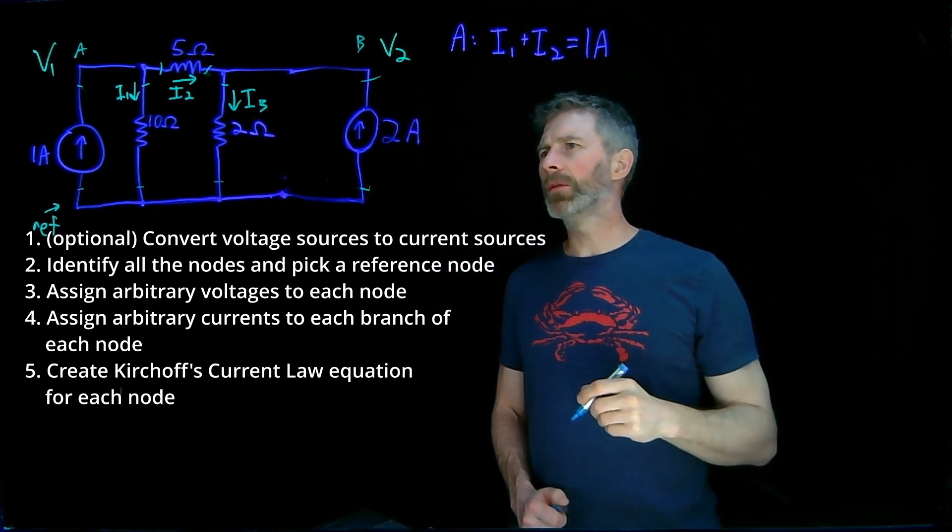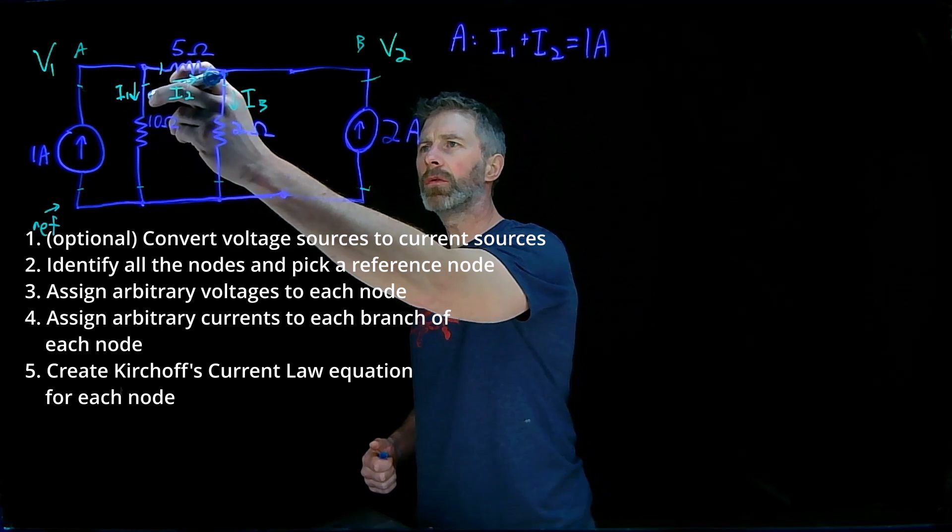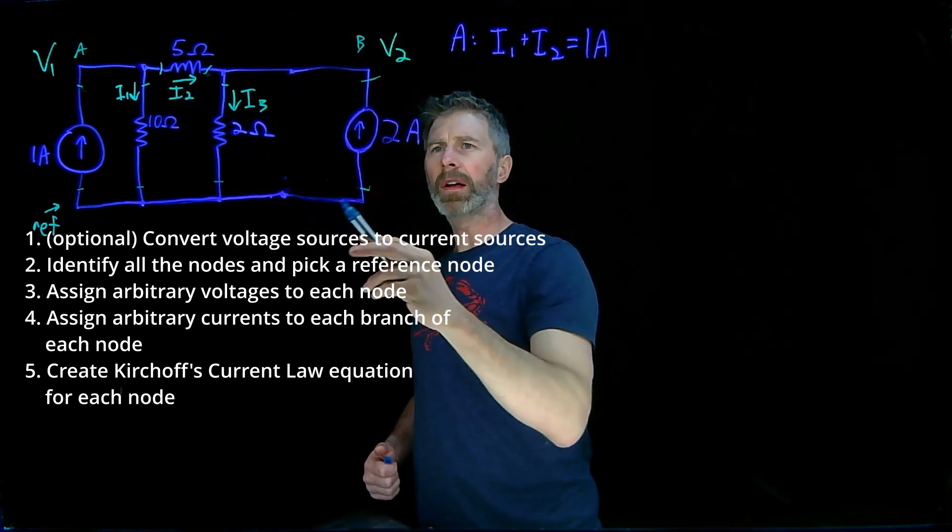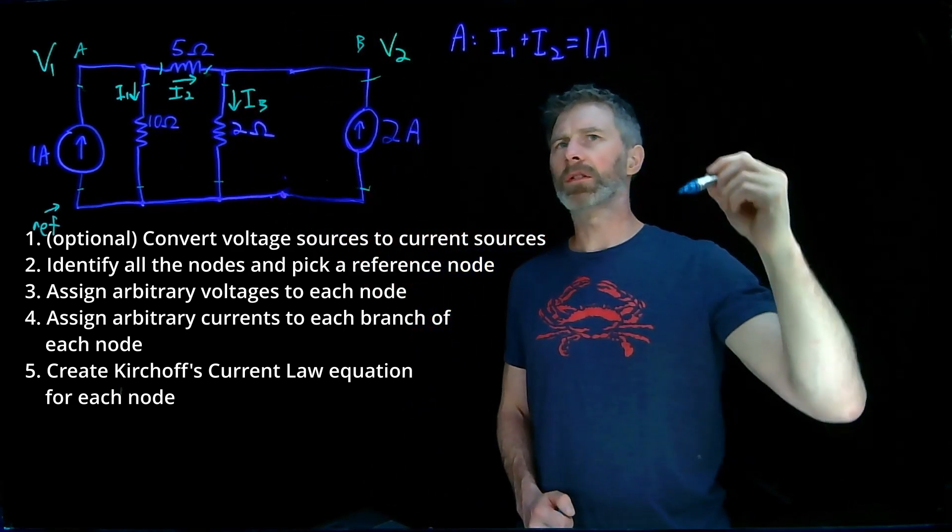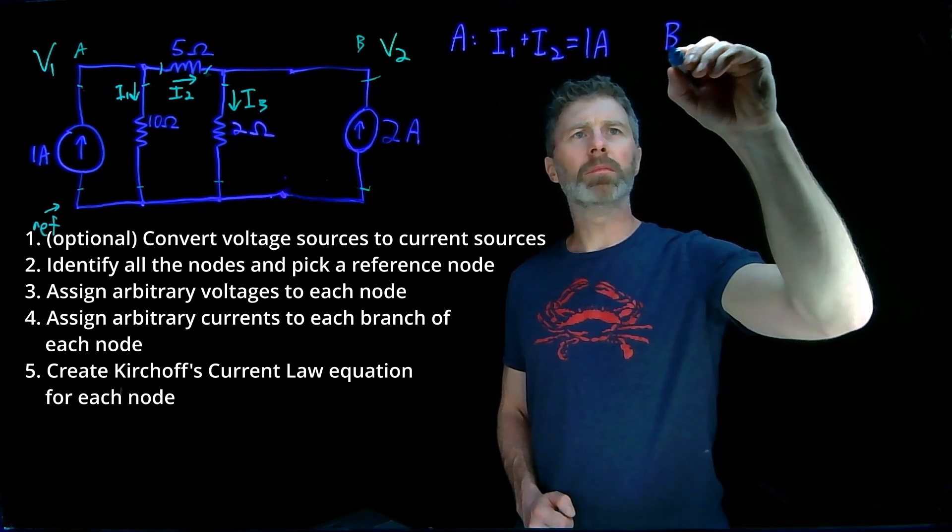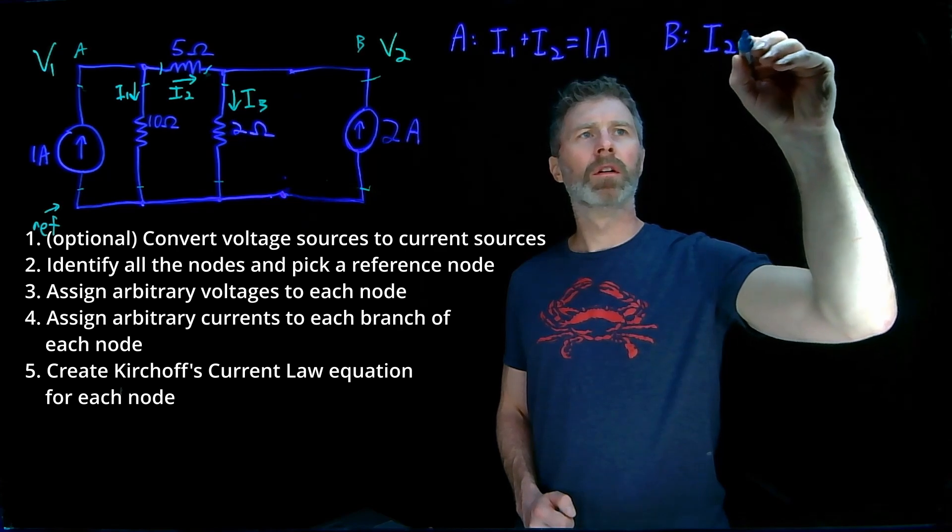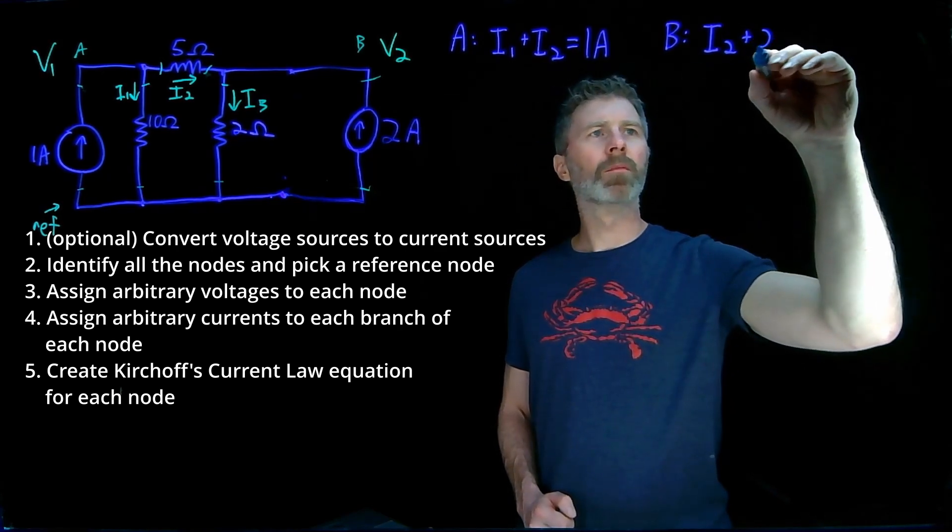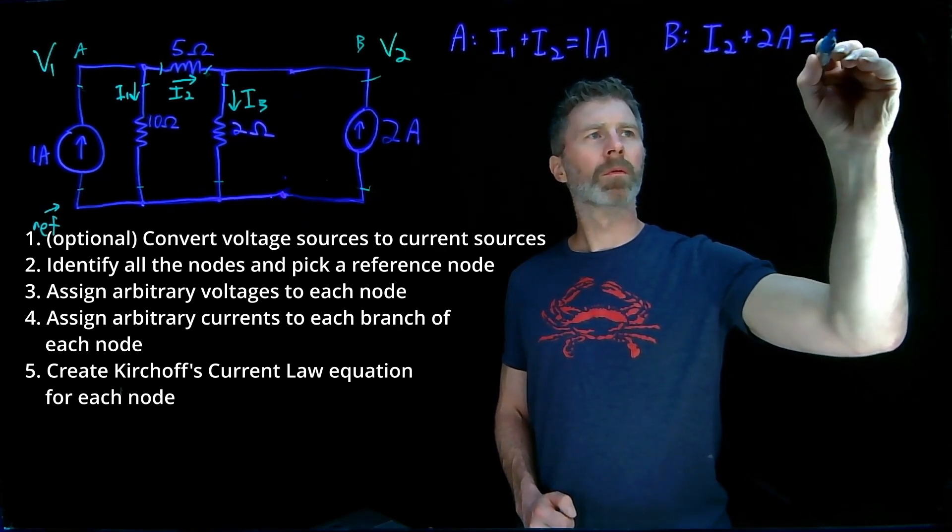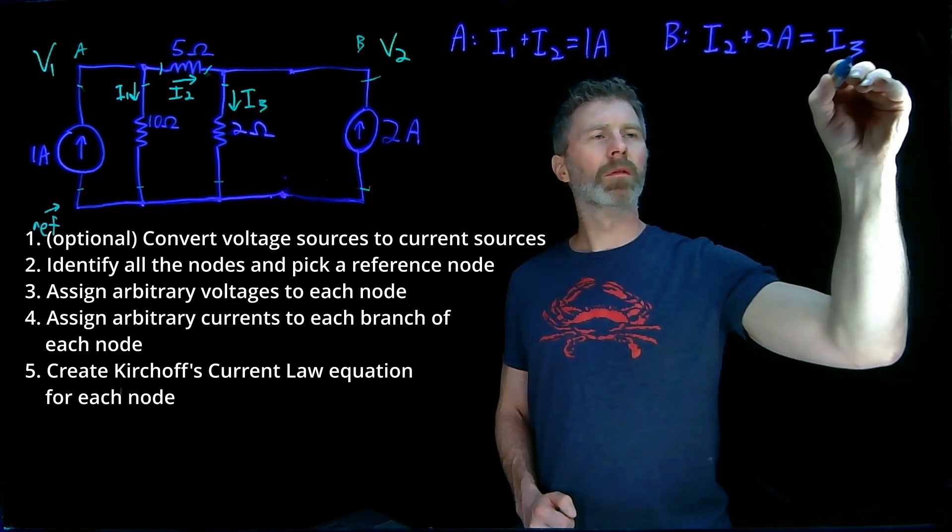For the other node, we have I2 going into the node, I3 going out, and two amps going in. So for node B, we have I2 plus two amps equals I3.